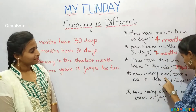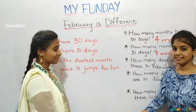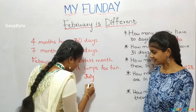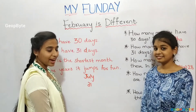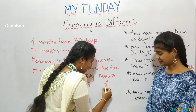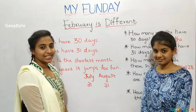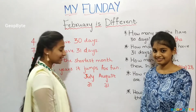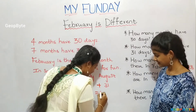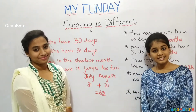How many days together are in July and August? July has 31 days and August has 31 days. Now we have to find altogether how many days there are, so we shall add: 31 plus 31 is equal to 62. Let us write: 62 days.